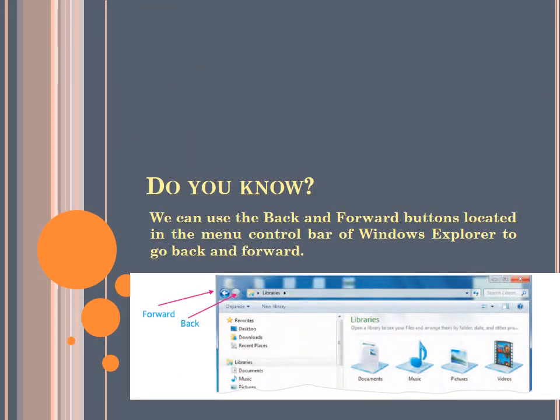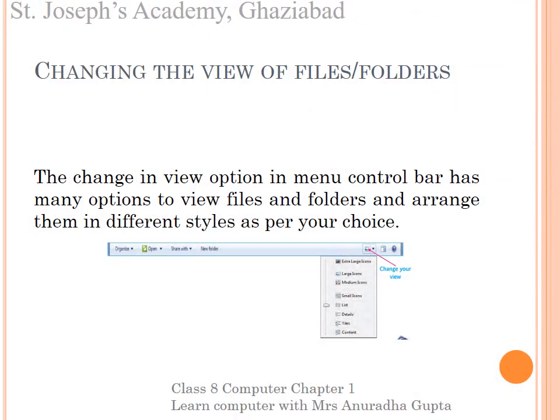Do you know? We can use the back and the forward buttons located in the menu control bar of Windows Explorer to go back and forward. Let's learn how to change the view of files and folders. The change in view option in menu control bar has many options to view files and folders and arrange them in different styles as per the choice.